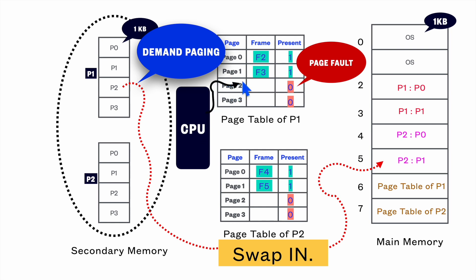consider that portion of the program resides in page 2 of process 1. This has to be executed now. So for execution, it should be loaded first. And during the mapping from virtual to the physical address,